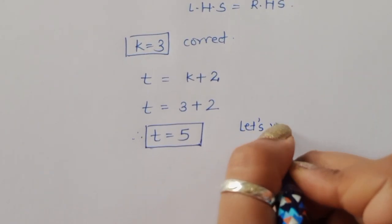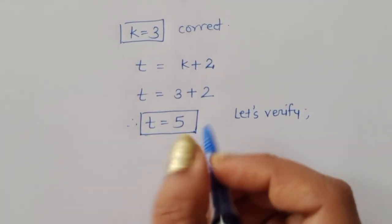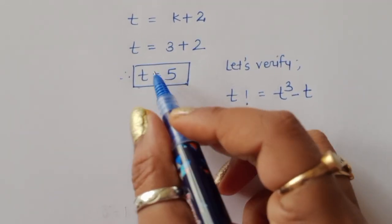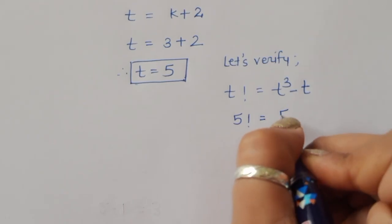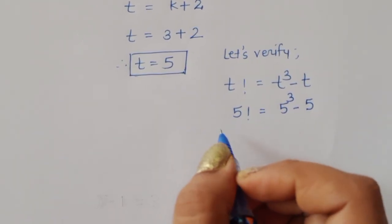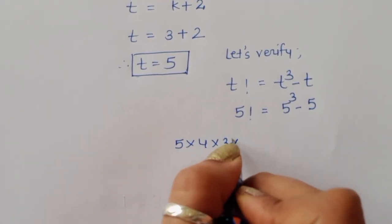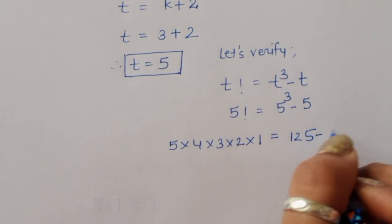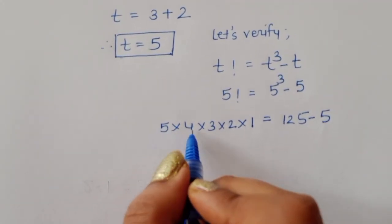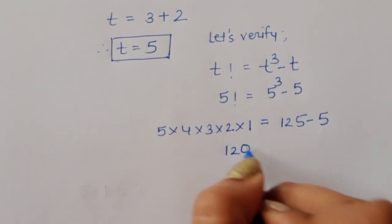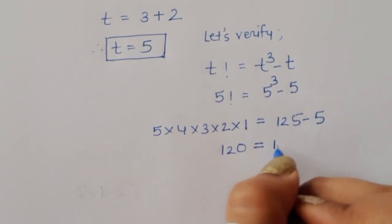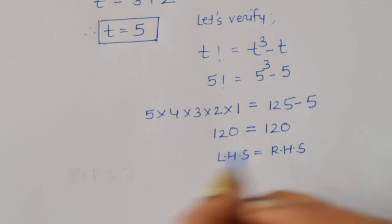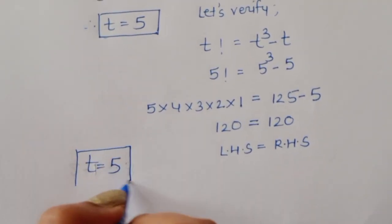Let's verify: factorial of 5 equals 5 cubed minus 5. Factorial of 5 is 5 times 4 times 3 times 2 times 1 equals 120. And 5 cubed minus 5 is 125 minus 5 equals 120. LHS equals RHS, so t equals 5 is the correct solution.